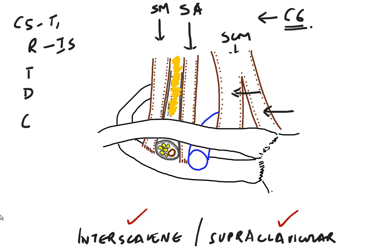At the interscalene area, it has the roots that we are interested in, whereas when we go down to the supraclavicular area, it is the trunks that we are interested in. As the brachial plexus goes downwards, the roots unite to form trunks, which can then be blocked at the supraclavicular area.